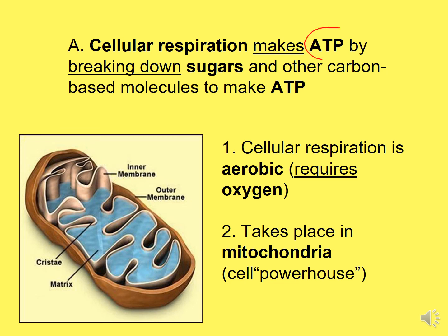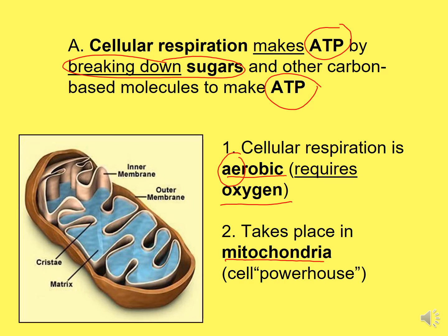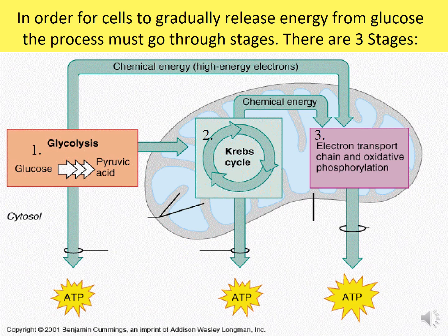Cellular respiration makes ATP by breaking down sugars. Photosynthesis creates the sugars; when we break them down, we produce ATP — adenosine triphosphate — our biggest source of energy. Cellular respiration is aerobic, meaning it requires oxygen, and takes place in the mitochondria. In order for cells to gradually release energy from glucose, it must go through three stages: glycolysis, the Krebs cycle, and the electron transport chain — ETC, also called oxidative phosphorylation.